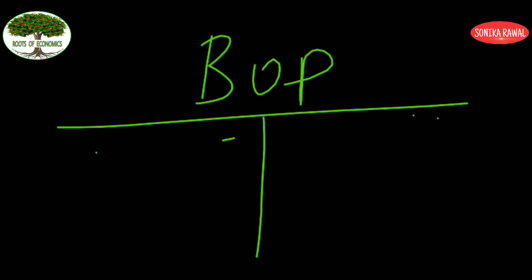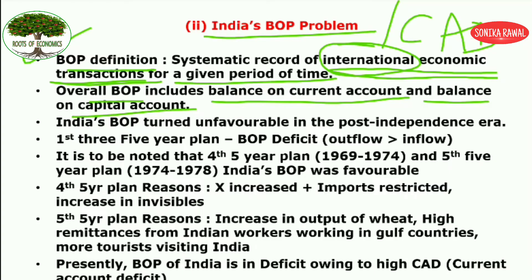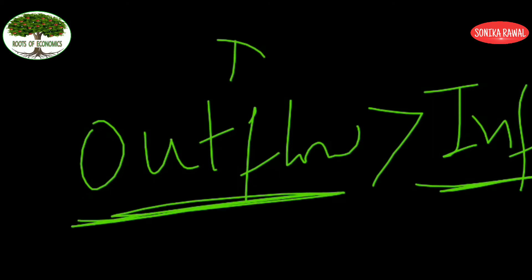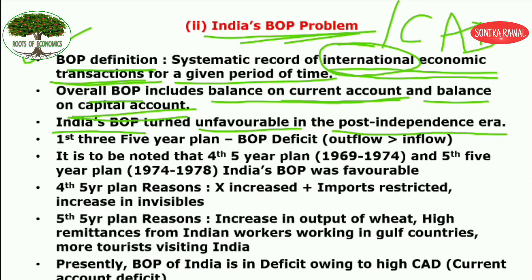Overall, BOP includes balance on current account and balance on capital account — both debit and credit sides. Now talking about BOP's problem: starting from independence to the present situation. After independence, BOP became unfavorable — the outflow of foreign currency was more than the inflow. So the BOP was in deficit during the first three five-year plans.